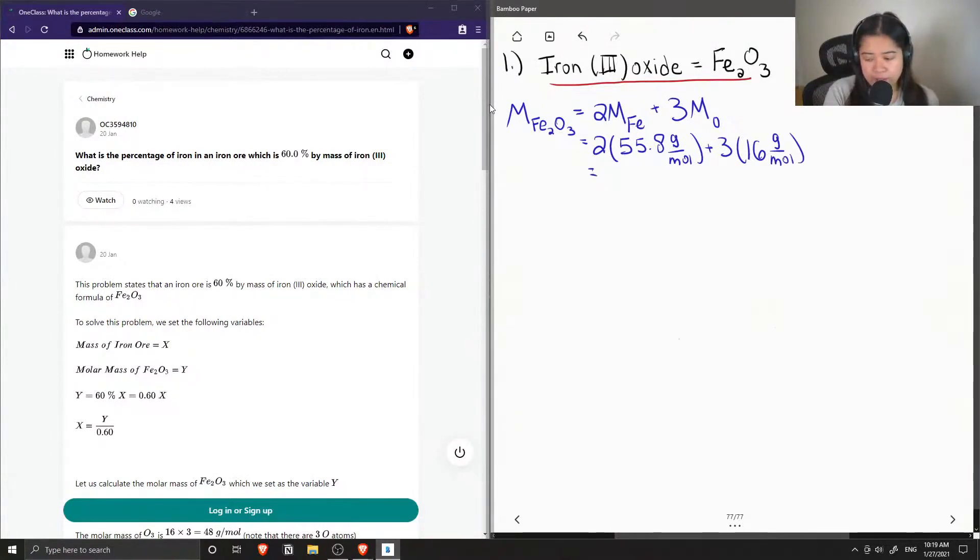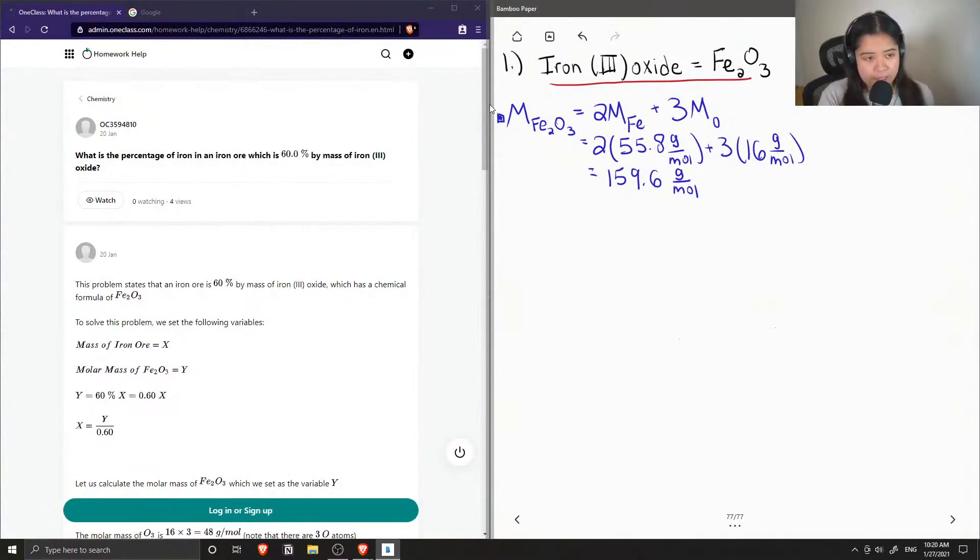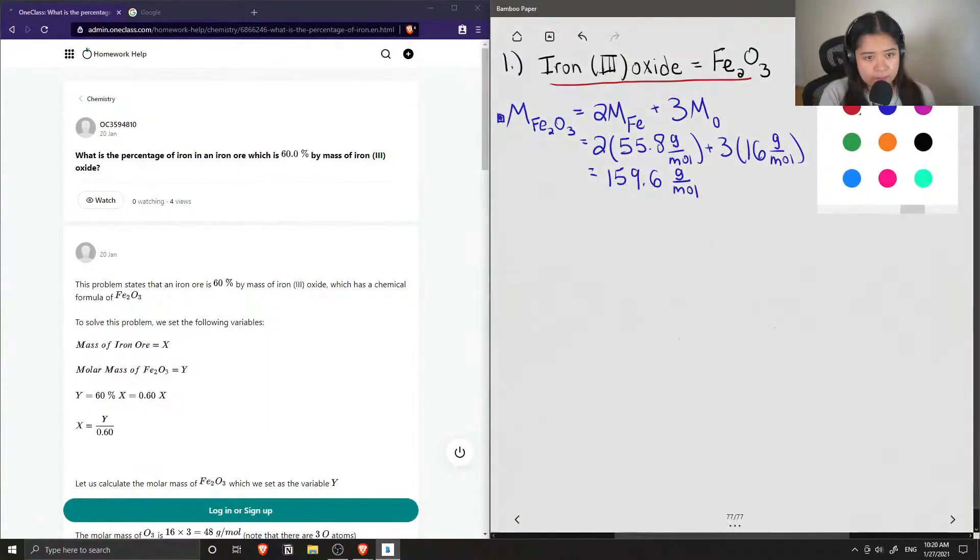So now if we sum these values up, we end up getting a molar mass of 159.6 grams per mole. Okay, so now that we know the molar mass of iron 3 oxide, let's assume we have 1 mole of sample, just so that we can compare everything in grams.